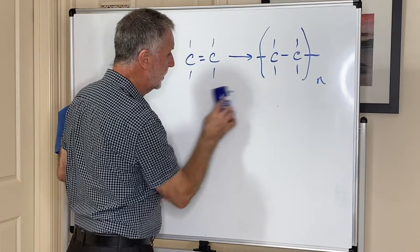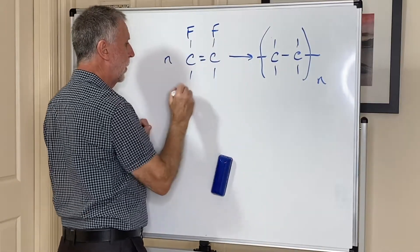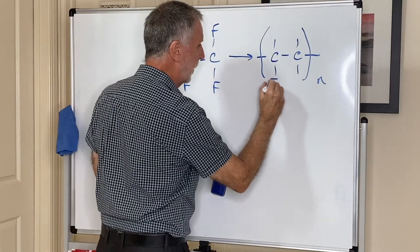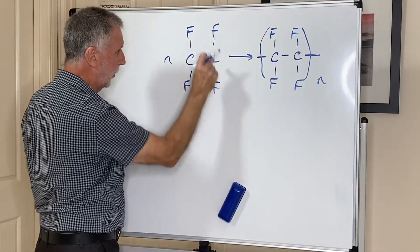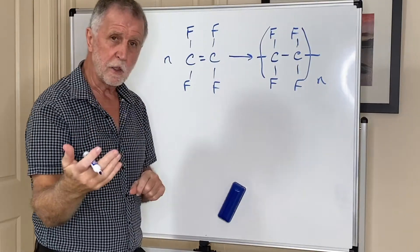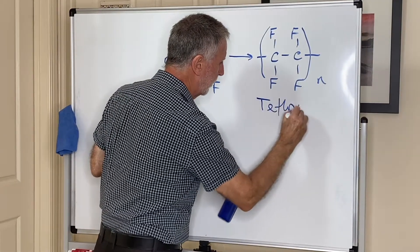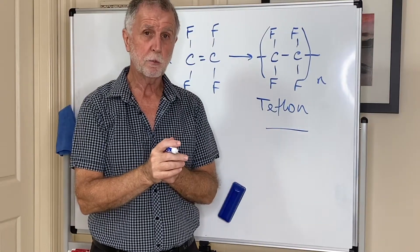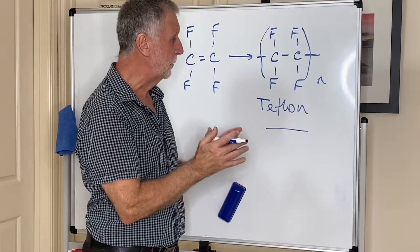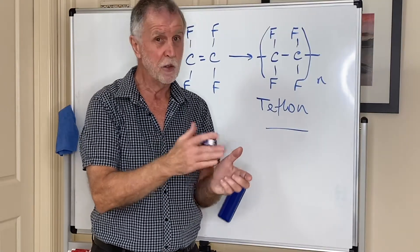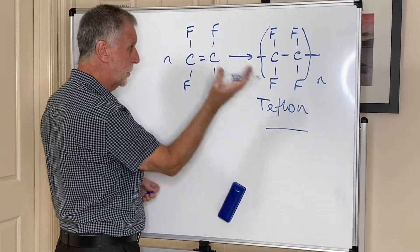Those are two examples of addition polymers. If I choose to put fluorines on all of those positions, the monomer is called tetrafluoroethene and the polymer would be polytetrafluoroethene. It has a commercial name — Teflon — which is the non-stick coating we put on our frying pans. The reason it's non-stick is because carbon-fluorine bonds are incredibly strong covalent bonds, so nothing can break them, and if nothing can break them then nothing can stick to them.